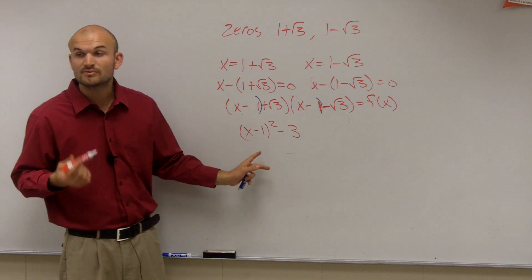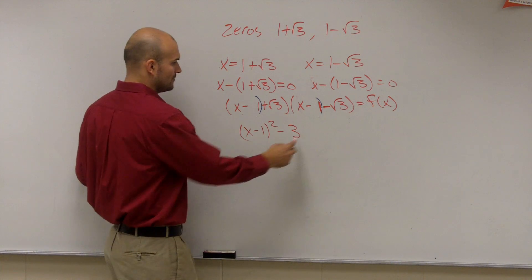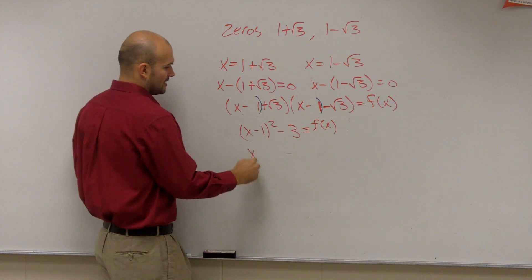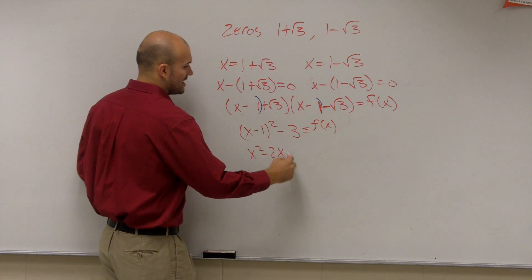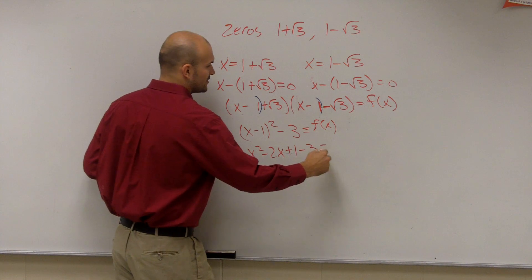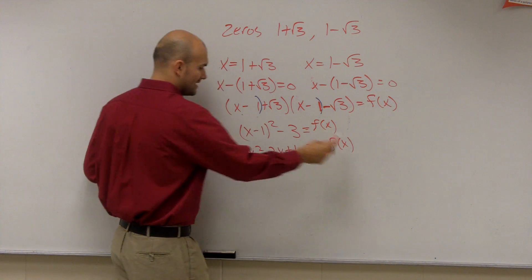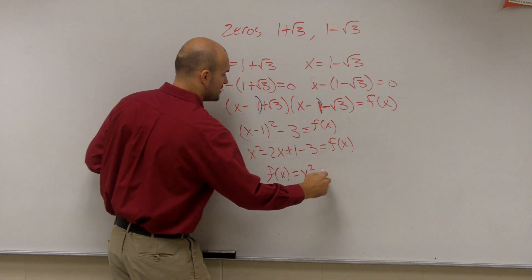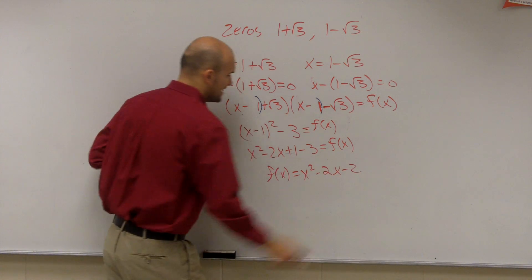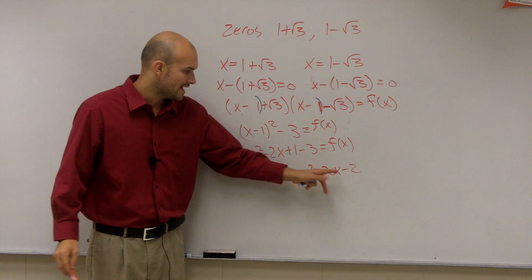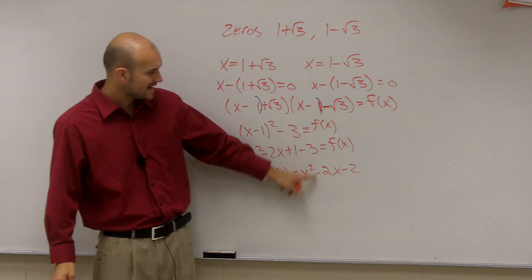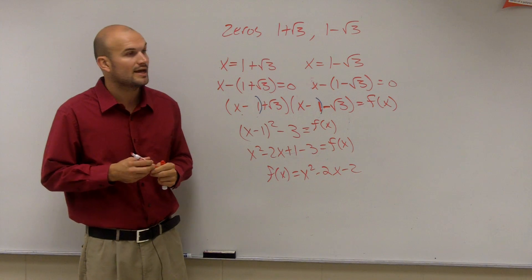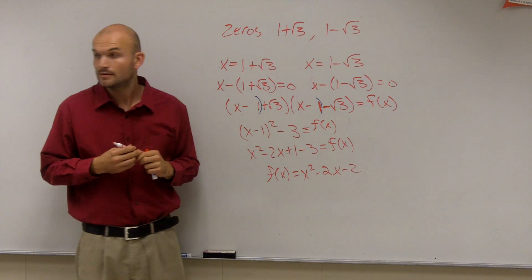Now x minus 1 squared is going to provide me with a perfect square trinomial. That equals f of x. So here I get x squared minus 2x plus 1 minus 3 equals f of x. I'll write the f of x first. f of x is my function equals x squared minus 2x minus 2. So therefore, when I have a function x squared minus 2x minus 2, it will include the zeros, 1 plus square root of 3, and 1 minus square root of 3.